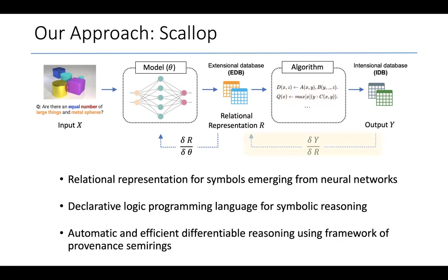And finally, our solution to the third challenge is to support automatic and efficient differentiable reasoning. To compute these partial derivatives, dy by dR, using a framework called provenance semirings.